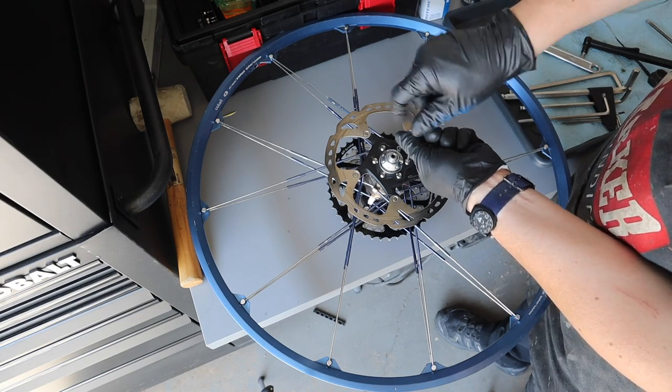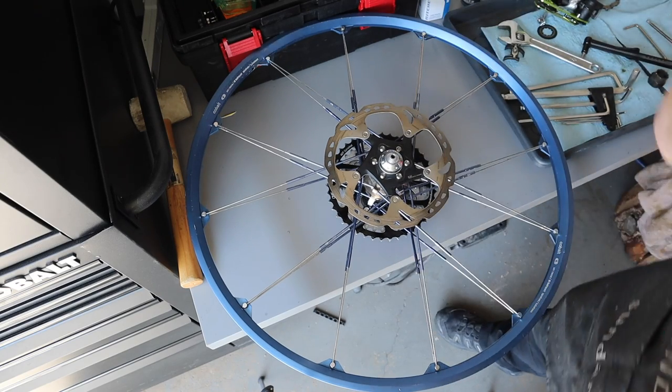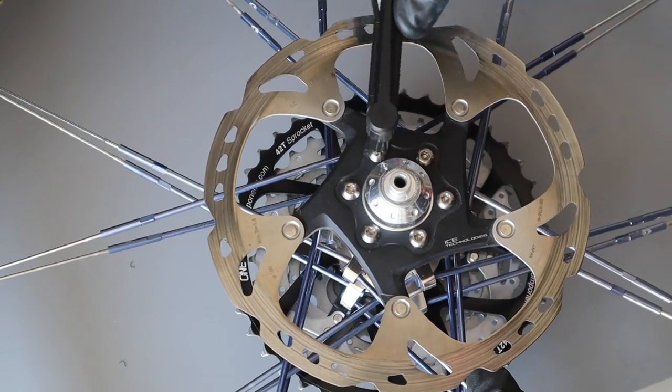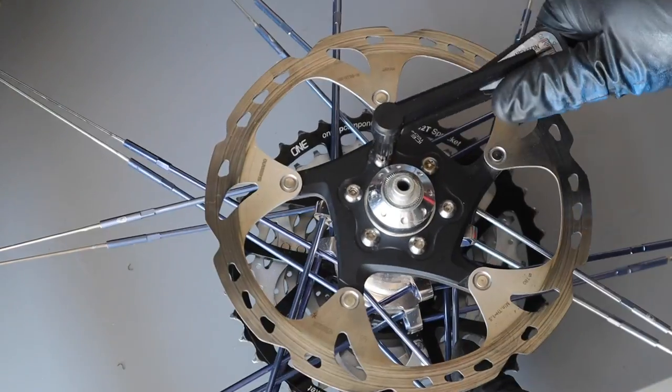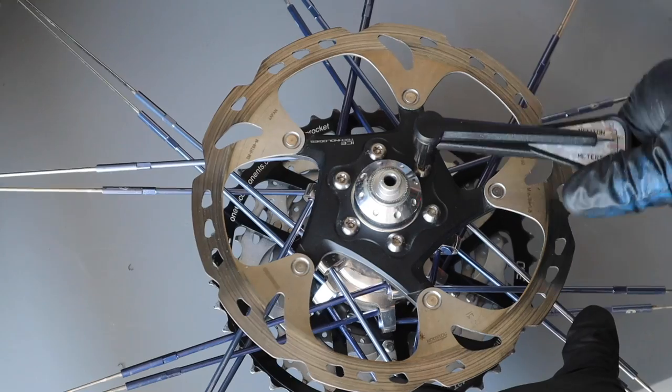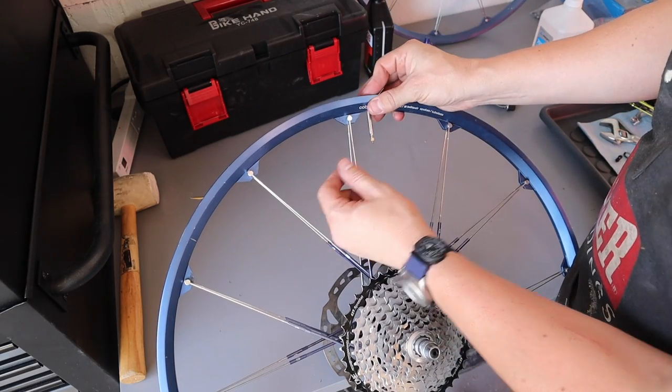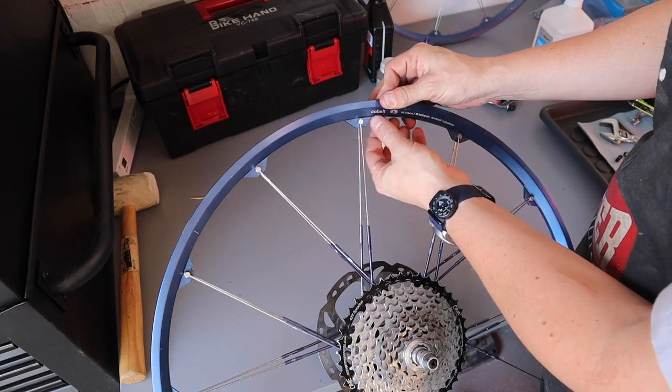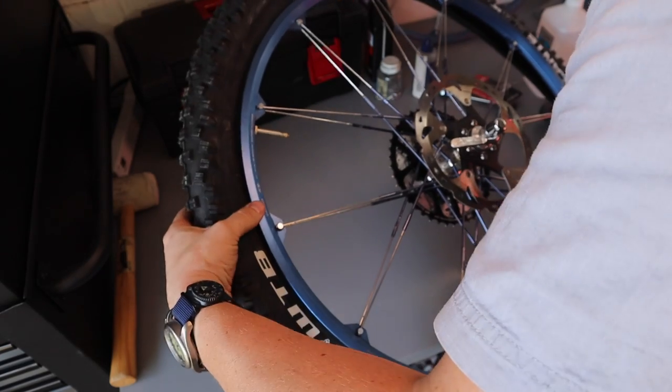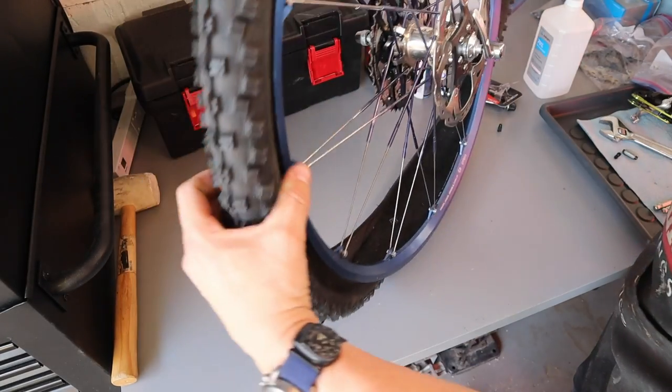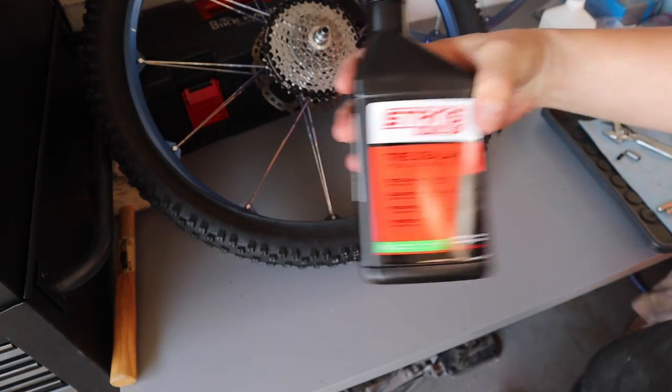Running 180 millimeter discs front and back on the bike, making sure everything's torqued down just right.